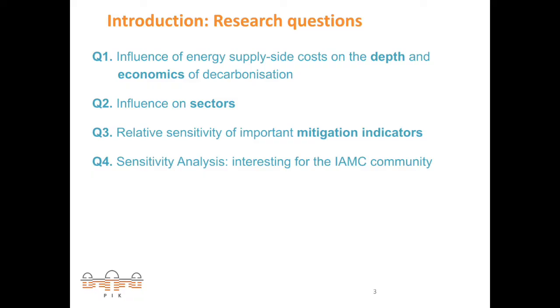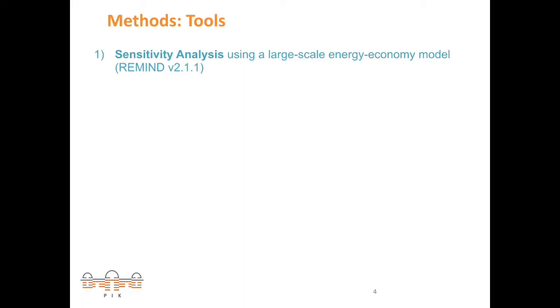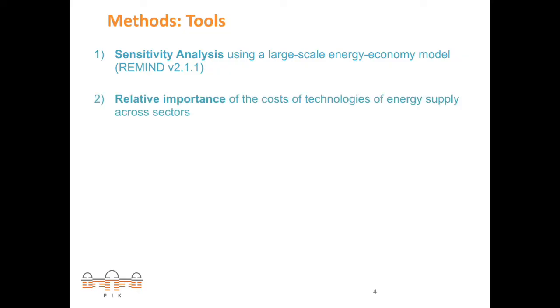Finally, in terms of the IAM community, sensitivity analysis on energy technology costs is interesting for us as a community. The methods we are going to use include sensitivity analysis using a large-scale energy-economy model, the model REMIND, which analyzes optimal pathways to reach climate targets. We will measure the relative importance of the cost of technologies of energy supply across economic sectors, and derive the sensitivity of global mitigation indicators using methods such as Sobol and Borgonovo indices.